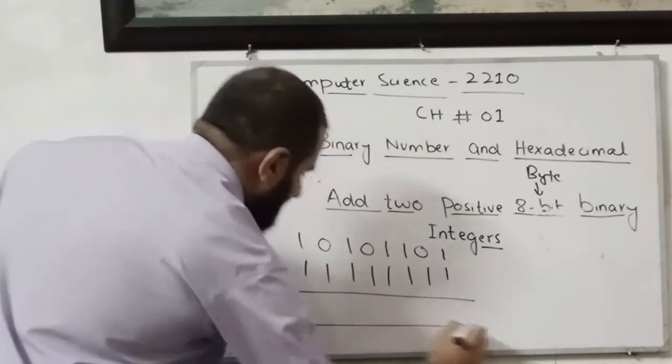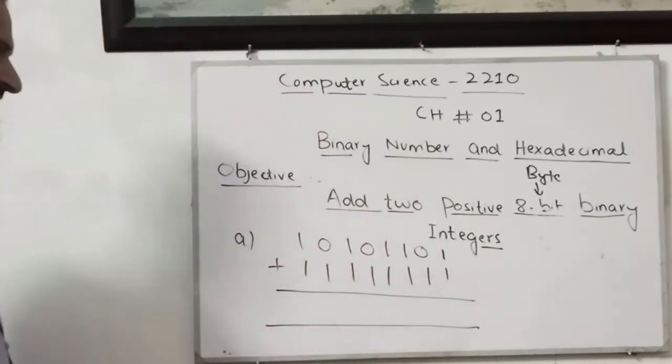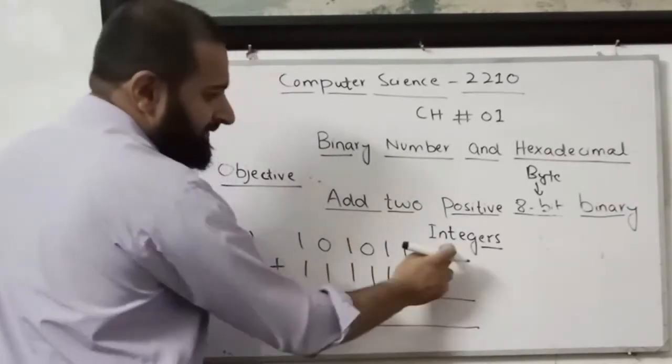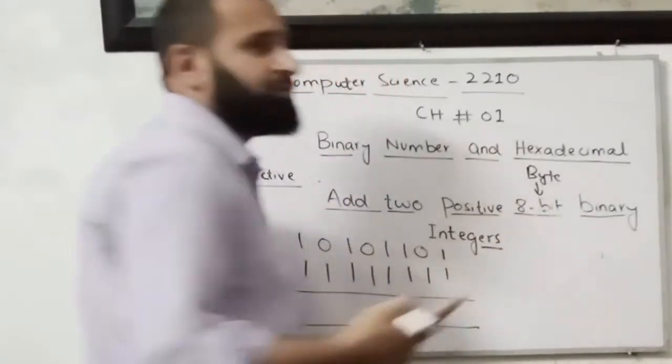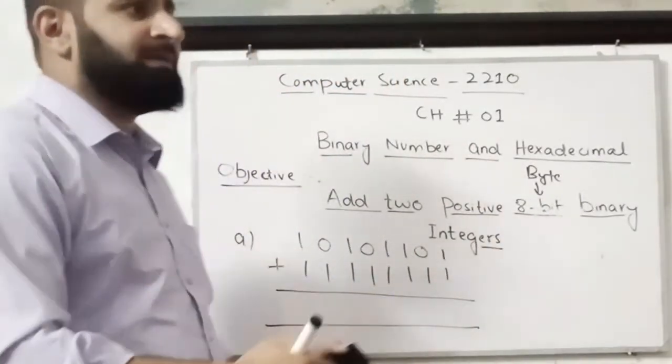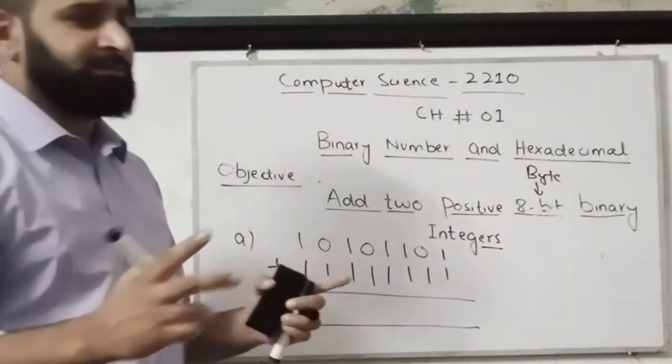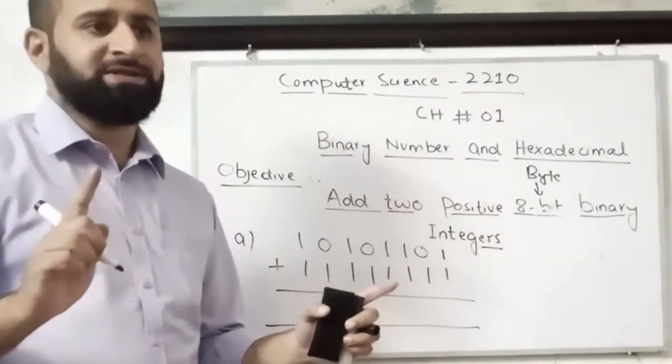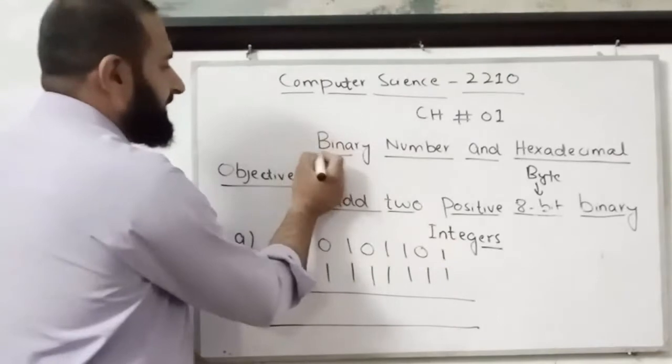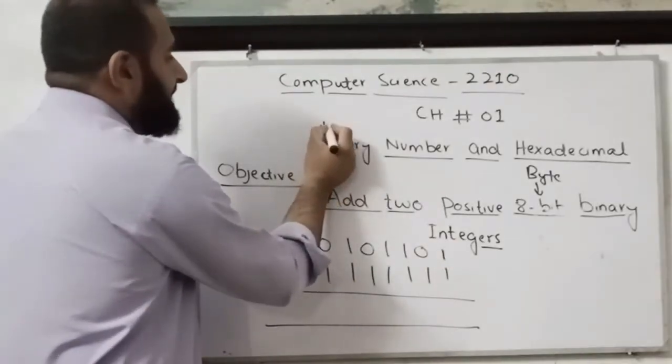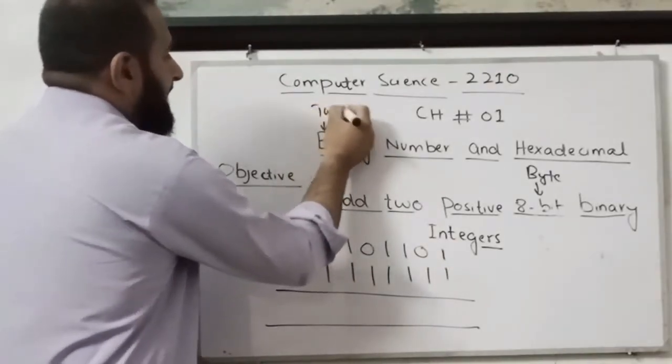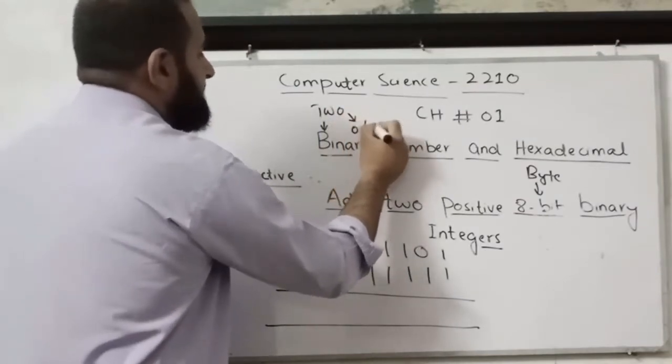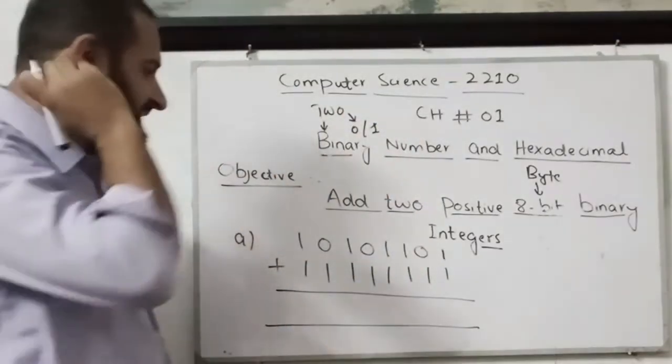So now I want to add all these numbers. I will take a start from my right side. 1 plus 1 is 2. So what is 2? 2 is a decimal number. In binary numbers we need only 2 values: 0 or 1. In binary numbers we have only 2 values. Binary means only 2, and that means we are going to use 1 or 0.